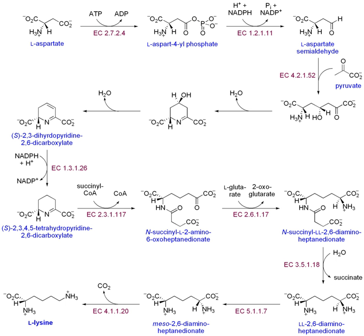Simple compounds can also join together to create a macromolecule. For example, fatty acids join together to form phospholipids. In turn, phospholipids and cholesterol interact noncovalently in order to form the lipid bilayer.